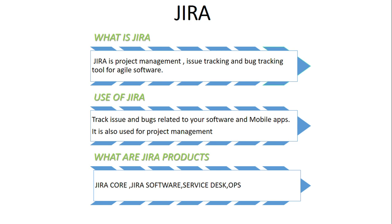The different Jira products are: Jira Core, Jira Software, Jira Service Desk, and Jira Ops. Jira Core allows you to track issues using customizable workflows, which determines how an issue goes from start to end and what steps are involved in basic task management. Jira Software is where issue tracking, bug tracking, and project management are done.